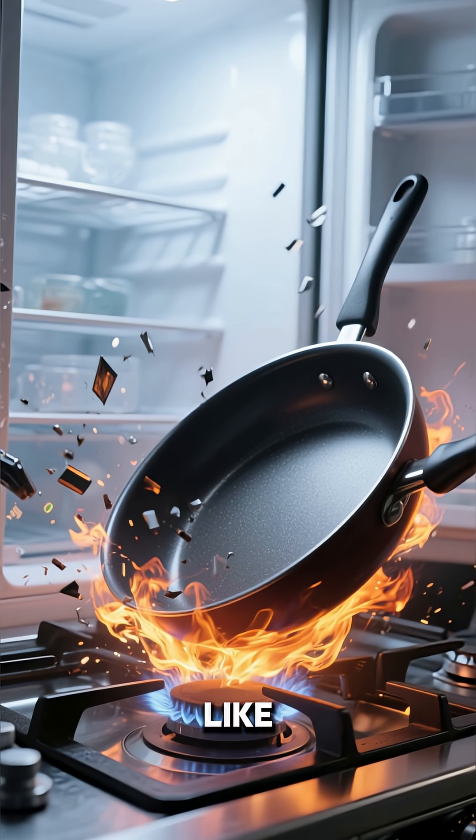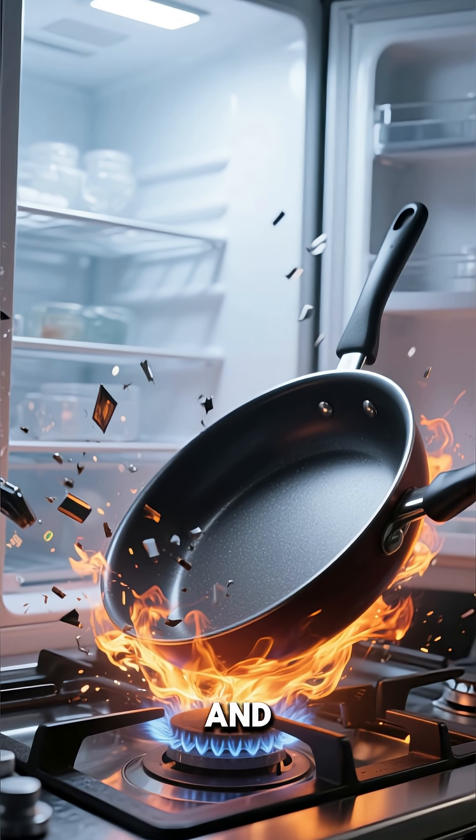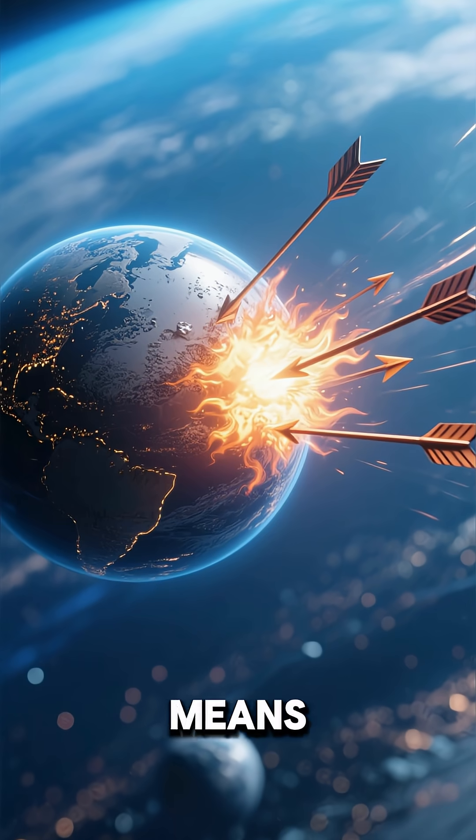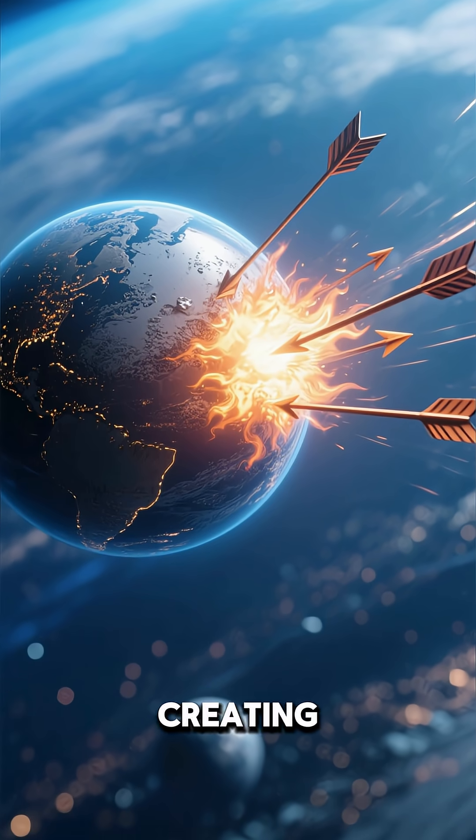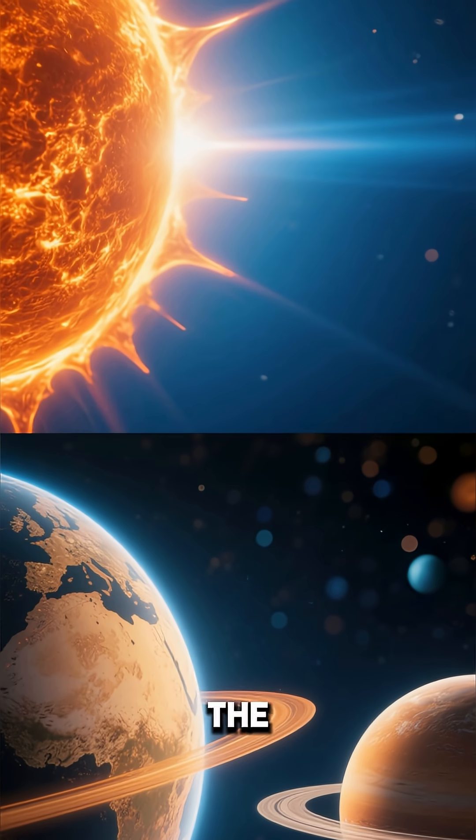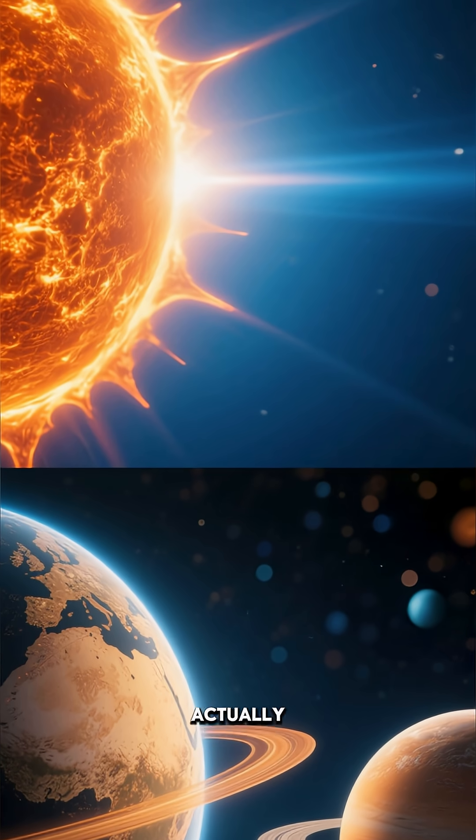Because Mercury has basically zero atmosphere to keep it warm. It's like yanking a hot pan off a fire and watching it instantly freeze. Having no atmospheric blanket means all its heat shoots straight back into space, creating a temperature drop of over 600 degrees. Being close to the sun only matters if the sun can actually see you.